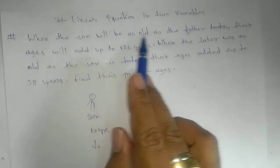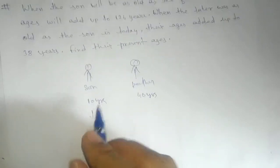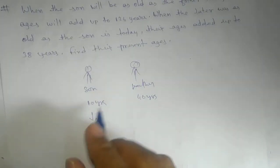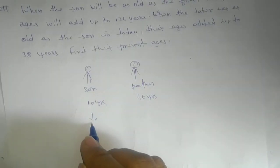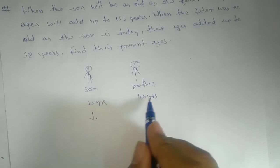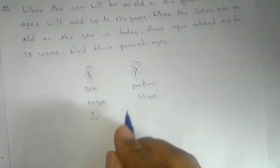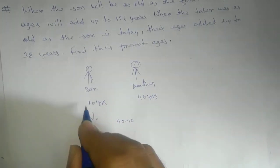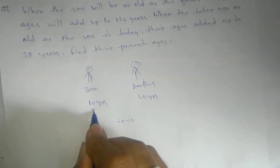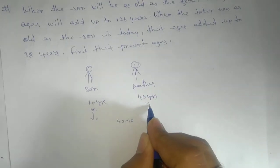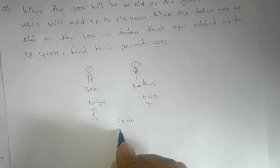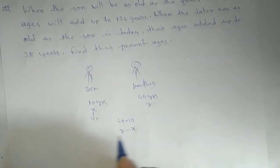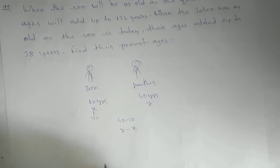...the son will be as old as the father is today. So what are we going to do? We find the difference between them — that means 40 minus 10. So if I take x for the son's age and y for the father's age, I will compute y minus x. This is my time gap.